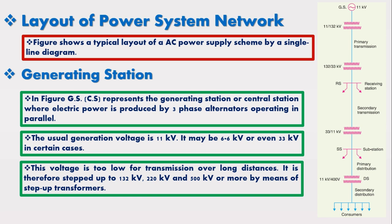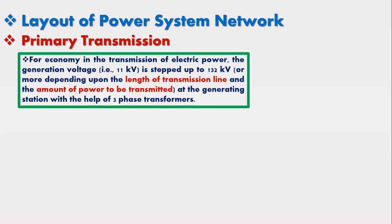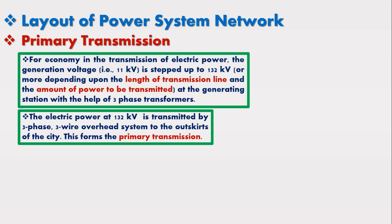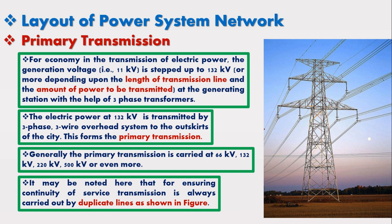For economy in the transmission of electric power, the generation voltage of 11 kV is stepped up to 132 kV or even more, depending upon the length of the transmission line and amount of power to be transmitted, using three-phase transformers at the generating station. The electric power at 132 kV is transmitted by a three-phase, three-wire overhead system to the outskirts of the city, forming the primary transmission. Primary transmission is generally carried out at 66 kV, 132 kV, 220 kV, or 500 kV. For continuity of service, transmission is always carried out by duplicate lines, which consist of a double circuit system capable of supplying power in case of failure in one circuit.